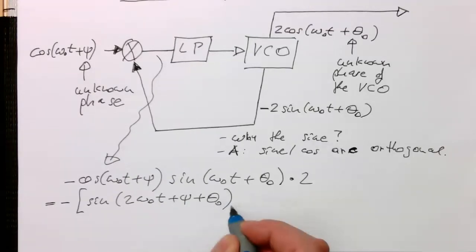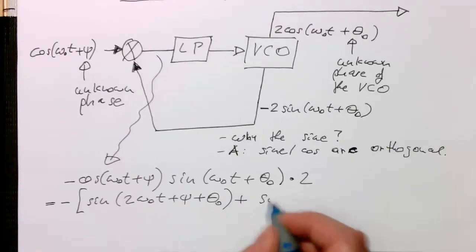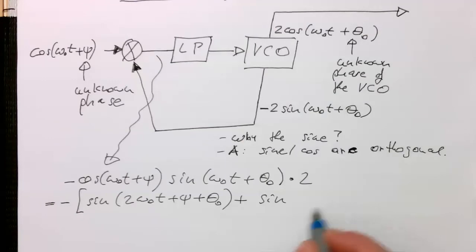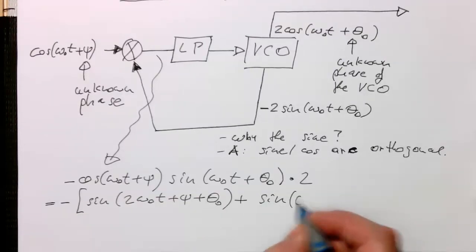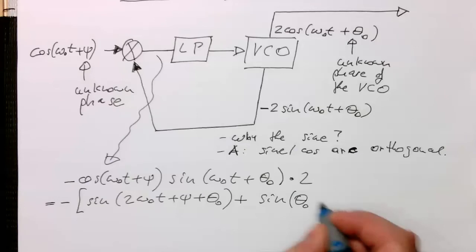So this gives us a term with two times the frequency. And then we've got the sine here with the difference between these two. So the omega zero cancels out and what is left is theta zero minus psi.